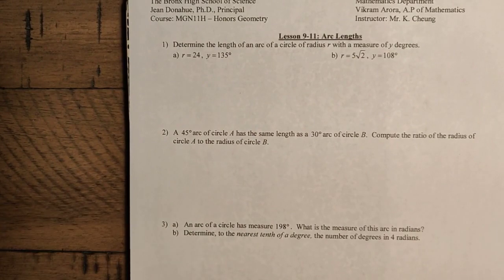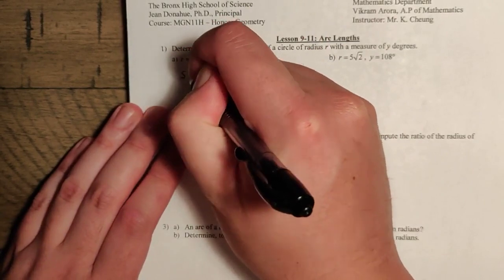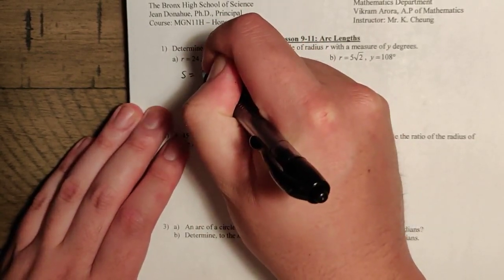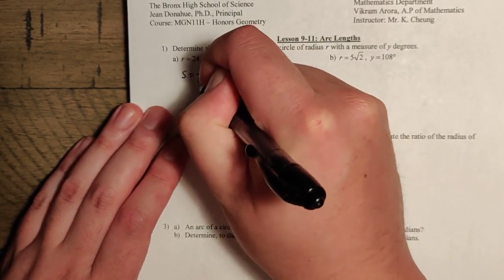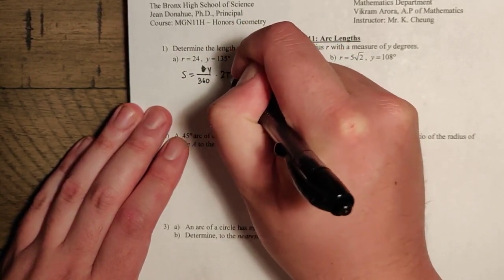Remember, all of this is just using the arc length formula we talked about before. So we know the arc length here, I'm going to call it s, is just going to be theta over 360. In this case, y over 360, times 2 pi r.